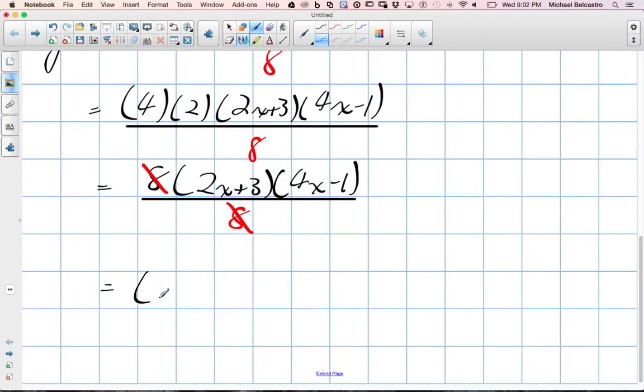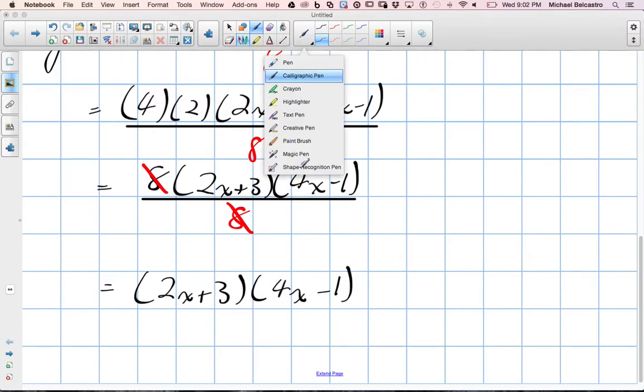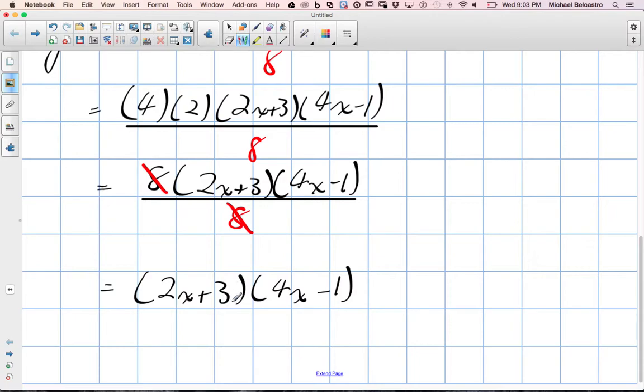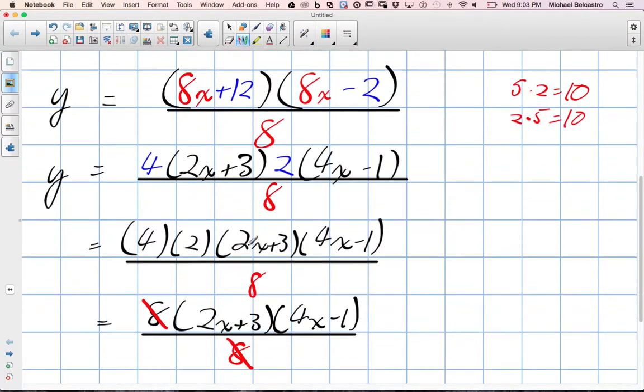Now I showed you everything step by step. I'll quickly talk about how we could have done this mentally just a little quicker. I just wanted to make sure you saw every step when we went through. Once we got to this part here, if I could visually see 4 times 2 is 8, I could have gone, that all disappears and we're just left with these two brackets.